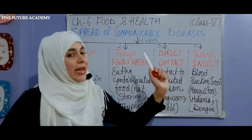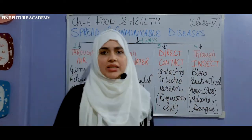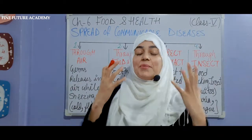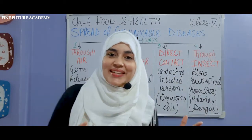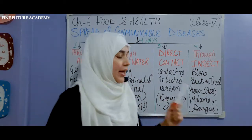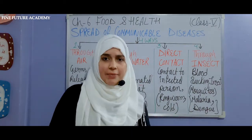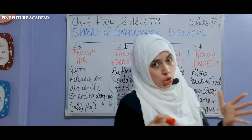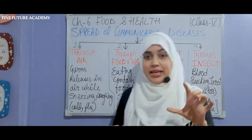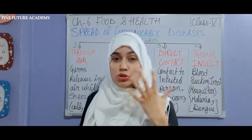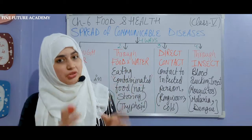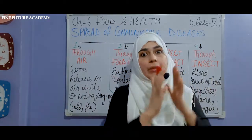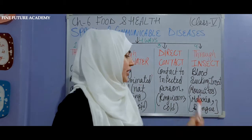The fourth way is through insects. With mosquito bites, you can get malaria and dengue. The mosquito sucks your blood, and because its mouth carries so many germs, those germs go into your skin and mix with your blood. That is why you get malaria and dengue from mosquito bites.